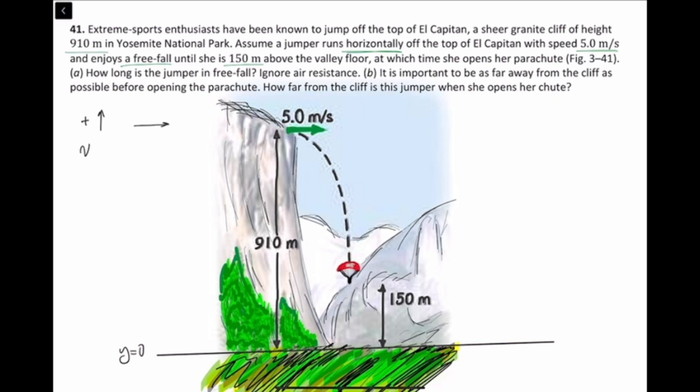To solve for time, we use the equation: y equals final height minus initial height plus initial velocity in the y direction times t plus one half times the acceleration in the y direction times t squared. The initial vertical velocity goes to zero.